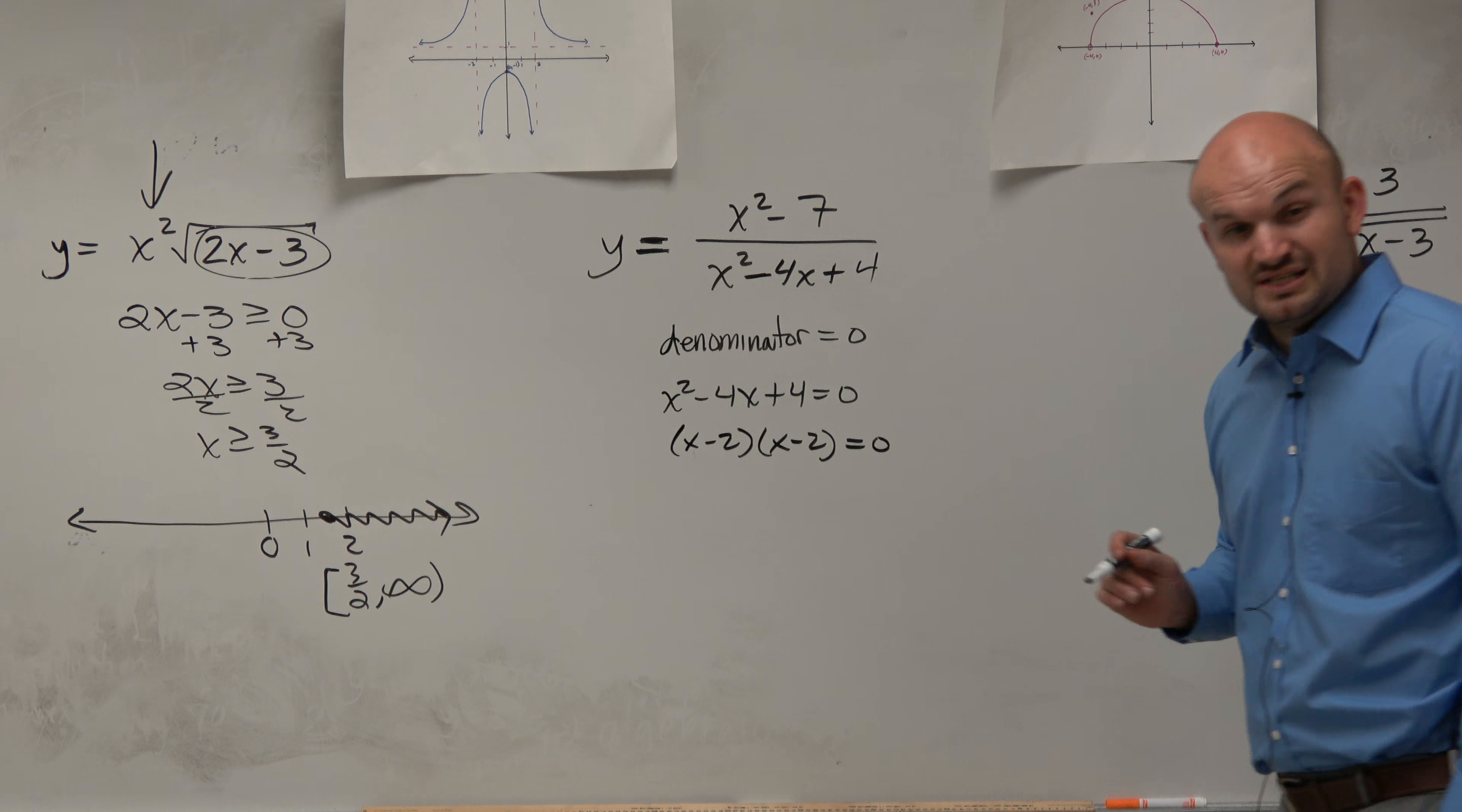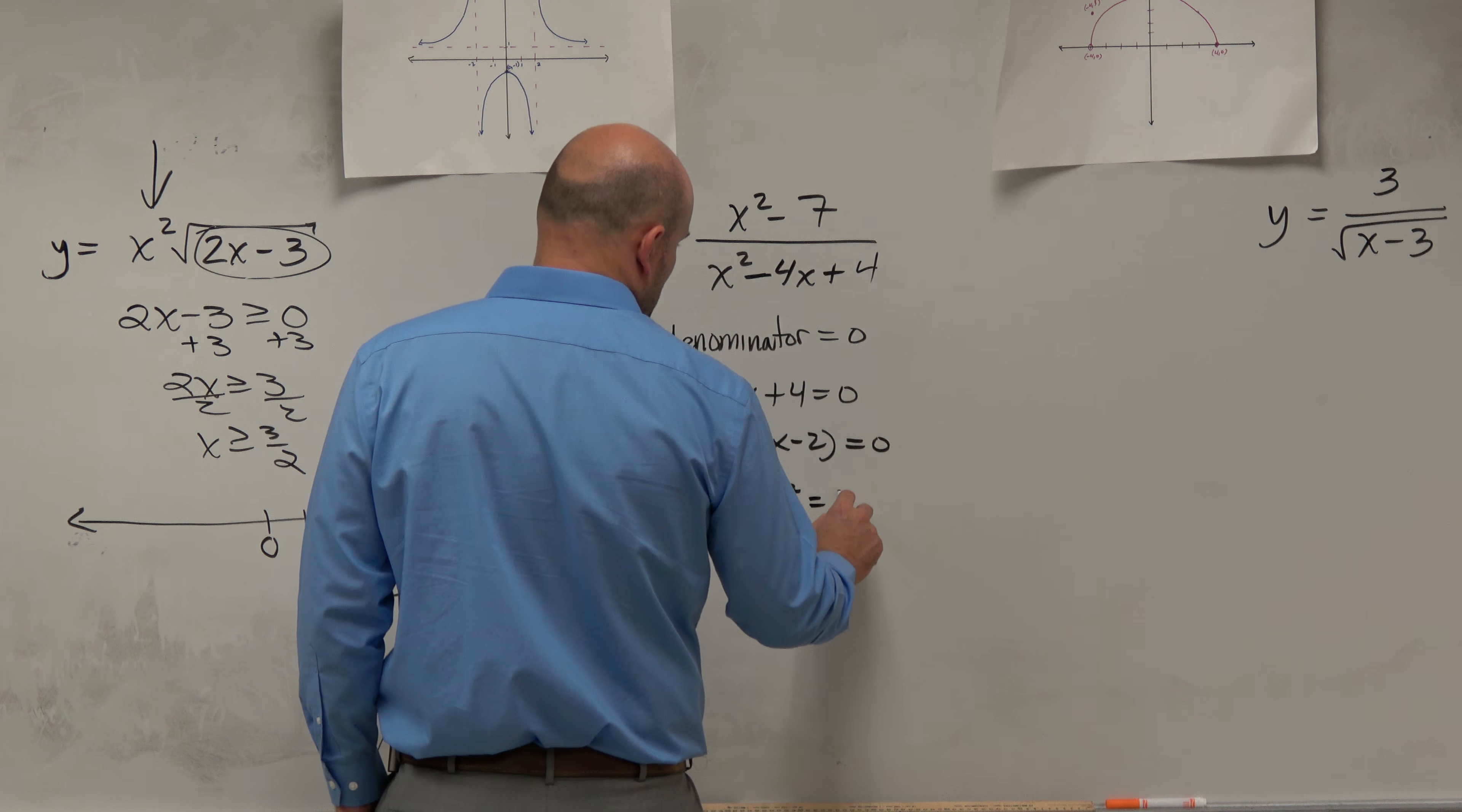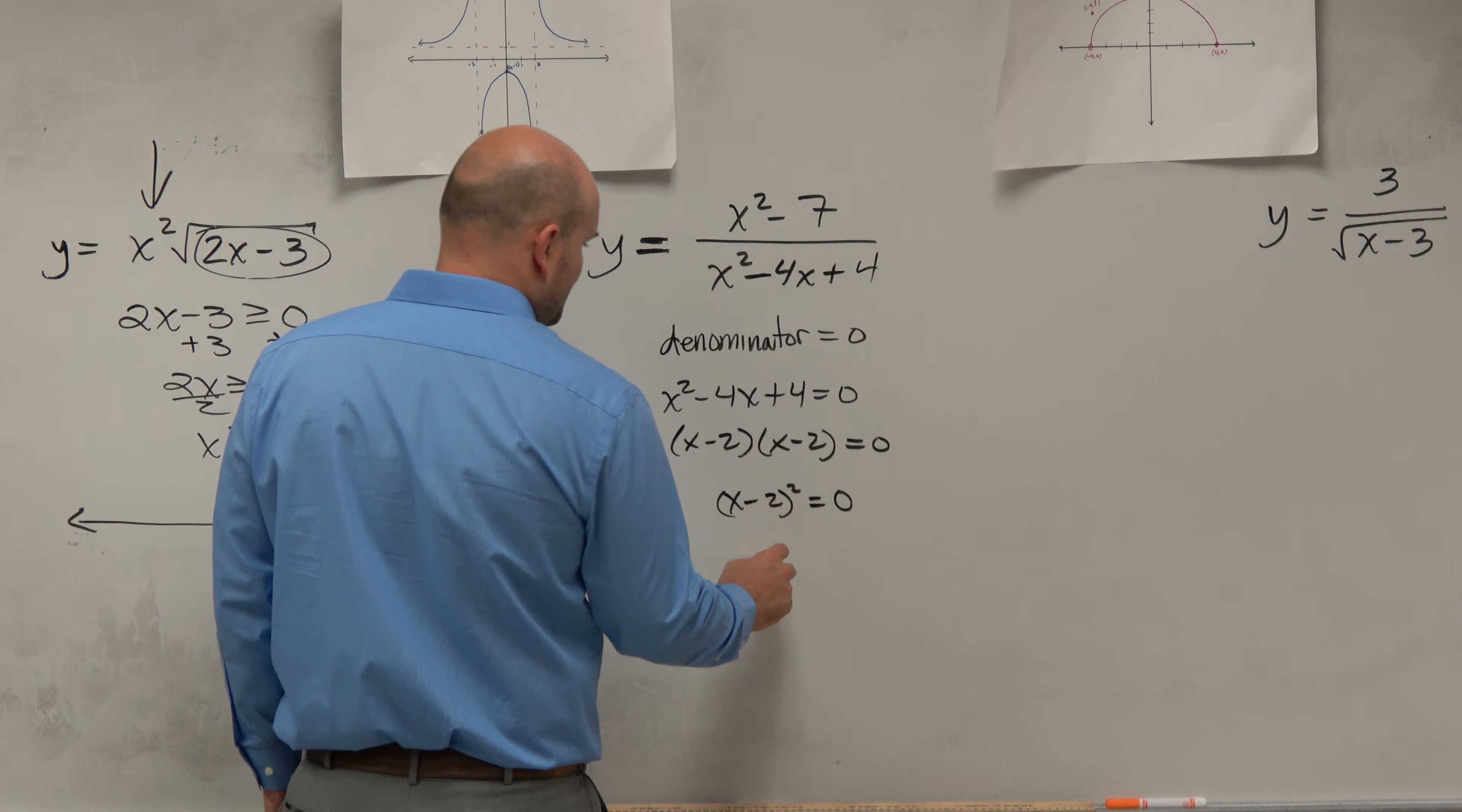And from here, you could use the zero product property, if you remember that. Or you could write it as a binomial squared and use the square root method. A couple different ways to do it, and there's pluses and minuses to the understanding. But either way...